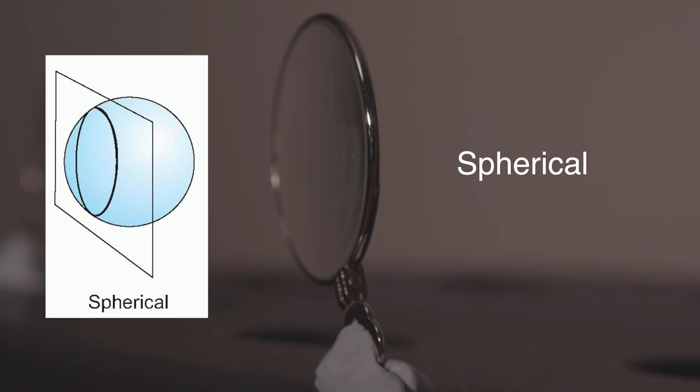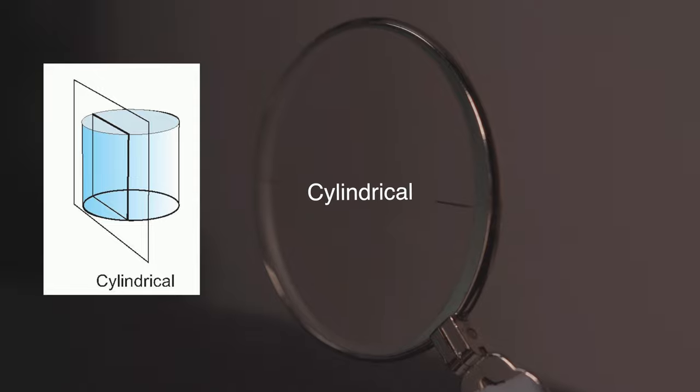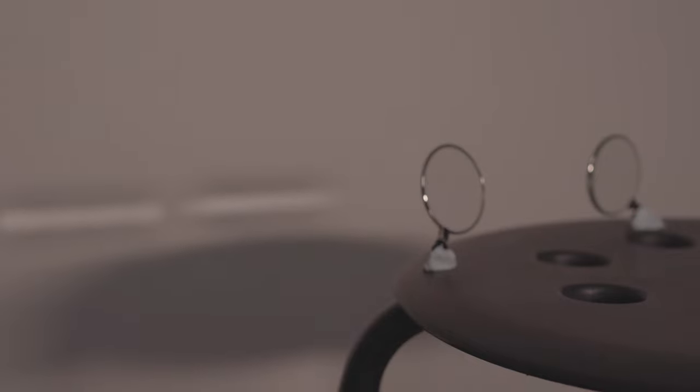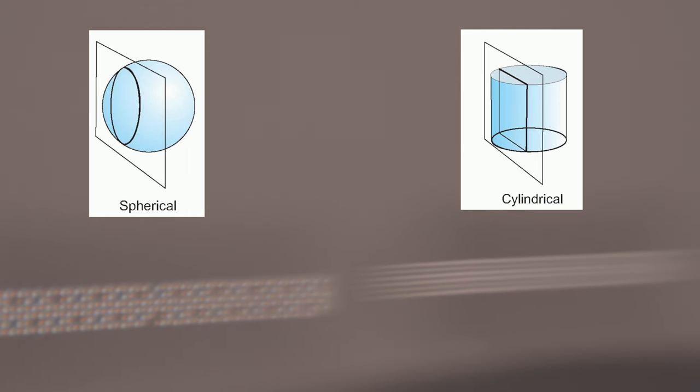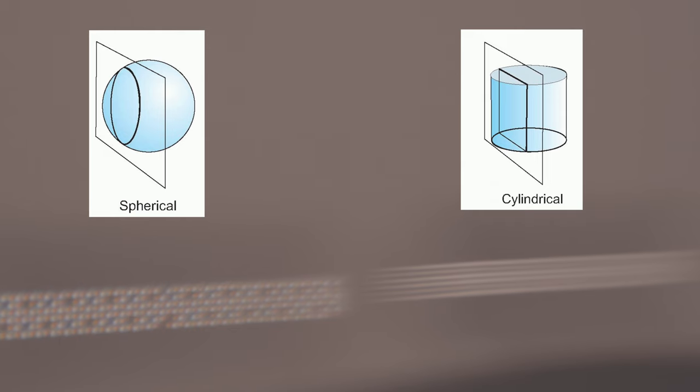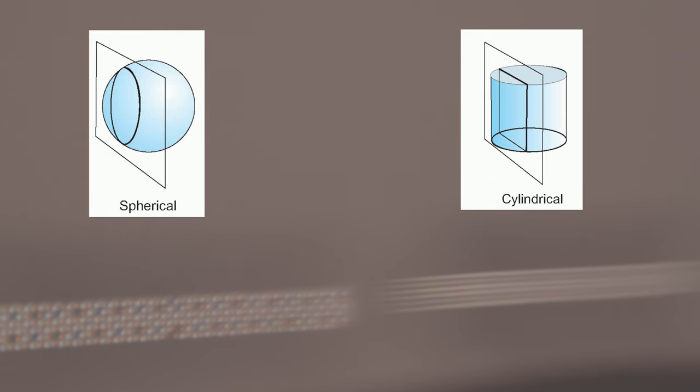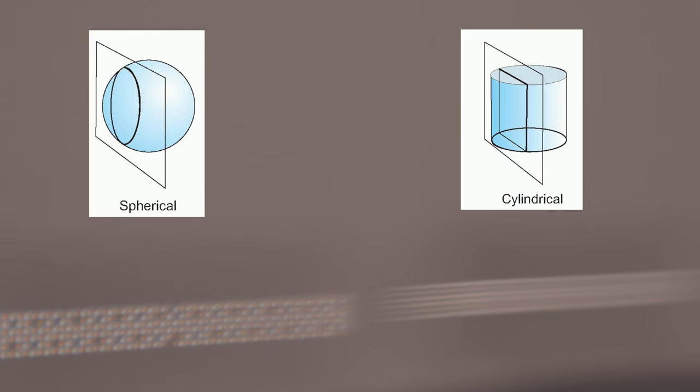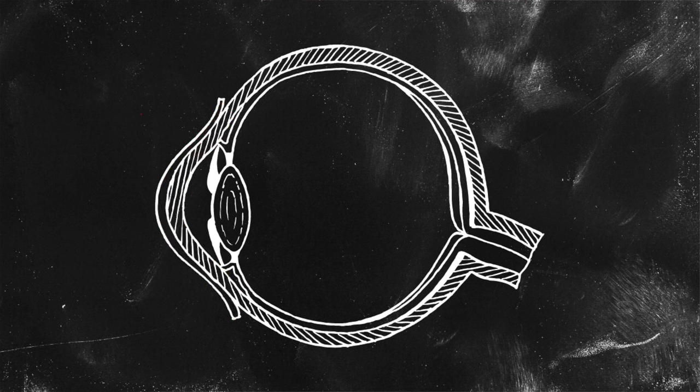Take for example, a perfectly spherical lens as opposed to a cylindrical one. You can see that the spherical lens produces a nice clean image on the wall, whereas the cylindrical lens stretches the image out, leading to unclear vision. The same can be said for our cornea.